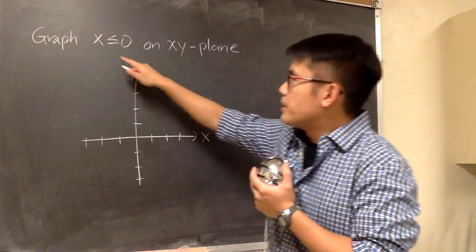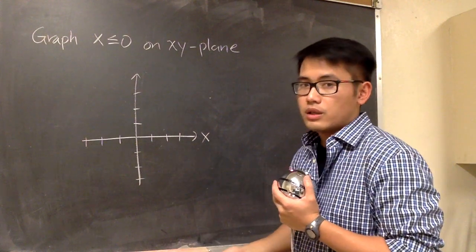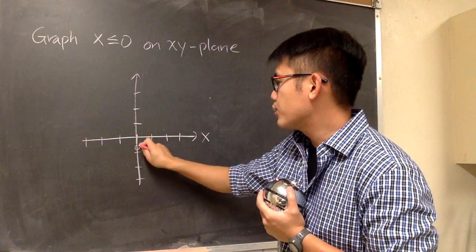Well, we care about x being 0, so this is how we do it. You go to x being 0, which is right here. This is where x is equal to 0.